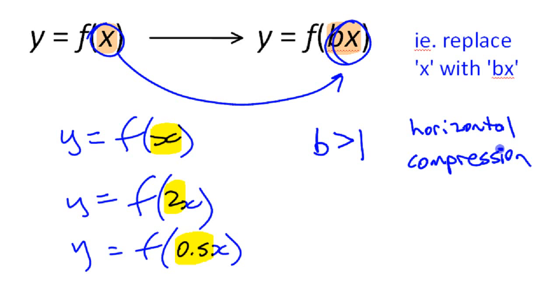It's a horizontal compression by, if you want to be technical here, you could say by 1 over b. If that's a 2, then it's a compression by a half, 1 over 2. If it's a 5, it's a compression by 1 over 5. And then if b is less than 1, it's a horizontal expansion.